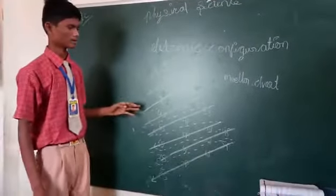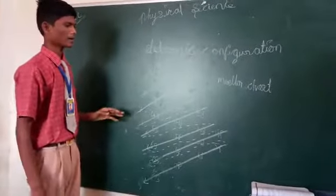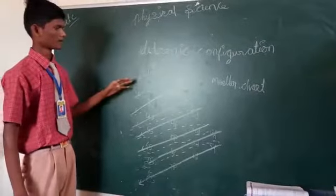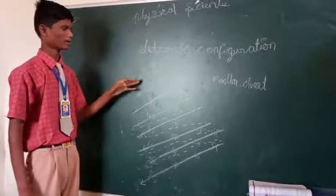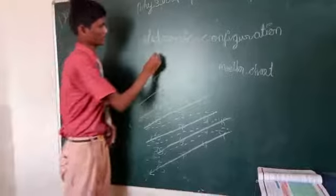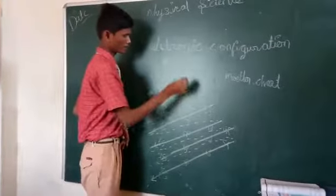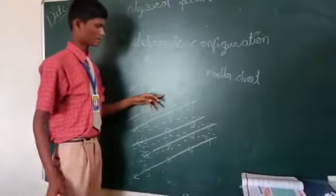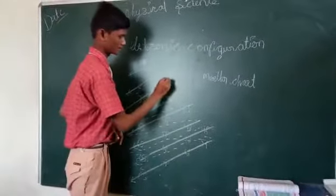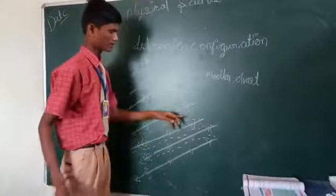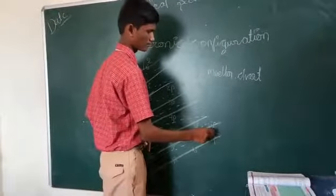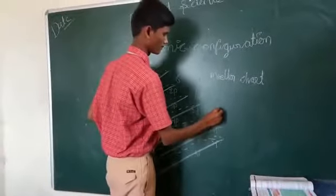This is the molar chart. We divide the elements in this molar chart. In the sub-shells, we have 2, 6, 10, and 40 respectively.